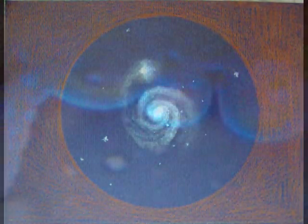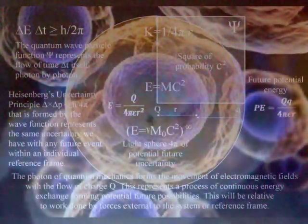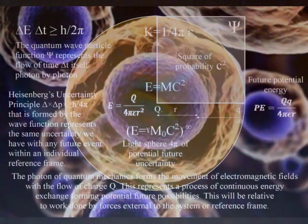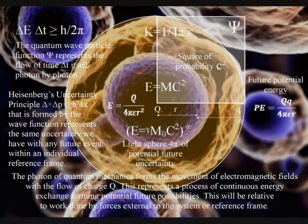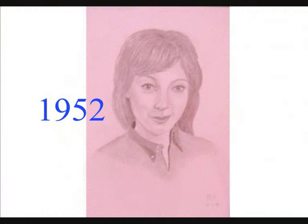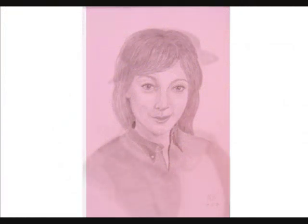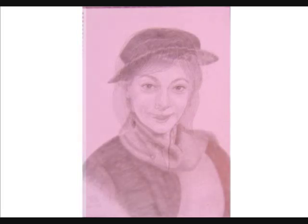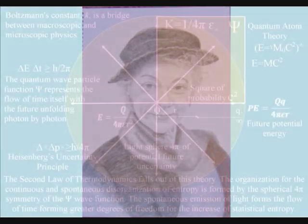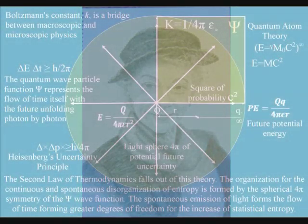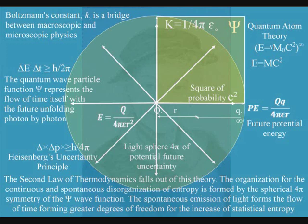We can also look down into individual reference frames, seeing the future unfolding photon by photon relative to the energy and momentum of that reference frame. The greatest effect this process of continuous energy exchange has on us is the aging process, with photon energy from the sun cascading down, forming greater degrees of freedom for the continuous increase in entropy or disorganization.